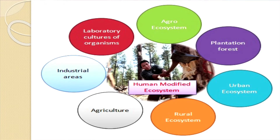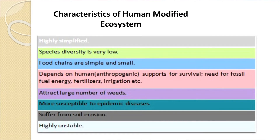It is a laboratory culture of organisms. Characteristics of human modified ecosystems are: they are highly simplified; species diversity is very low; food chains are very simple; they depend upon human or anthropogenic support for survival in the form of fossil fuel energy, fertilizer, irrigation, etc. They attract large numbers of weeds because we have modified the environment of such ecosystems. There are invasions by organisms which find such environments more suitable. They are more susceptible to endemic diseases, suffer from soil erosion, and are highly unstable.